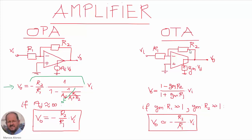If we are using an OTA, we can do the same using two resistances, but now we have a current source at the output. Analyzing the circuit gives an expression for the gain that depends on the transconductance Gm. To simplify, we design the circuit so that Gm times R1 and Gm times R2 are much larger than 1. In this case, we can neglect the unity terms in the numerator and denominator, and we obtain an expression similar to the OPA case.